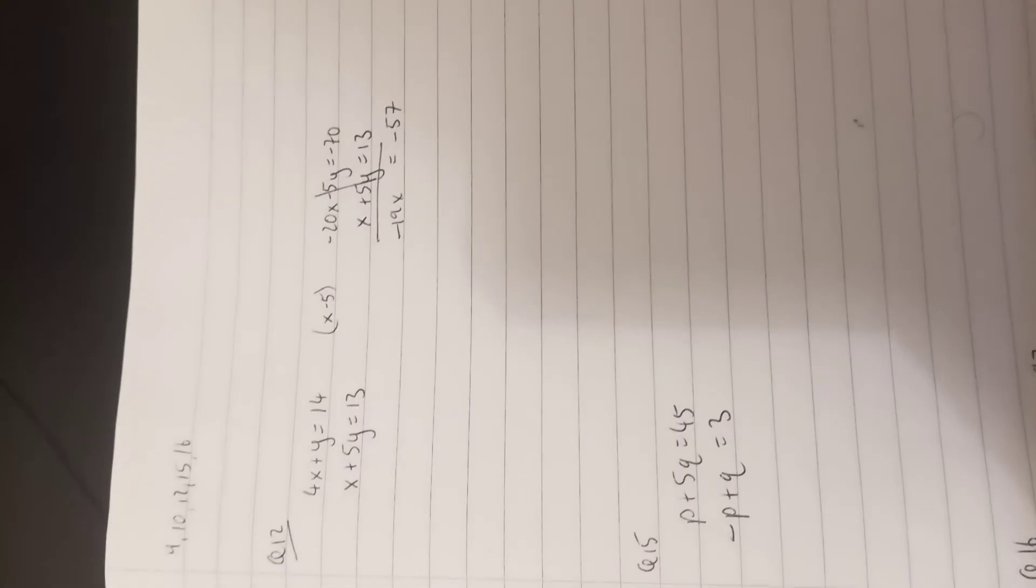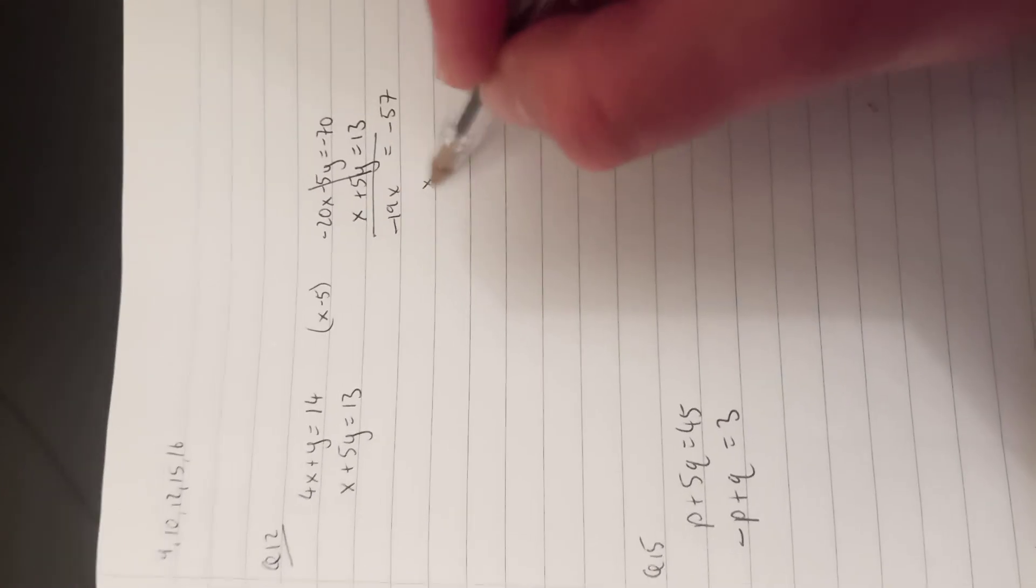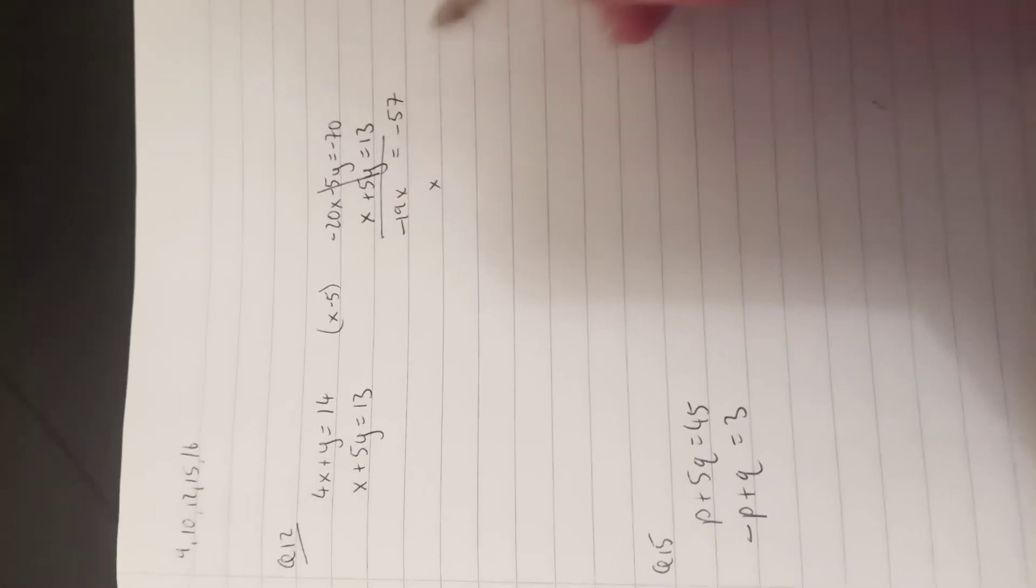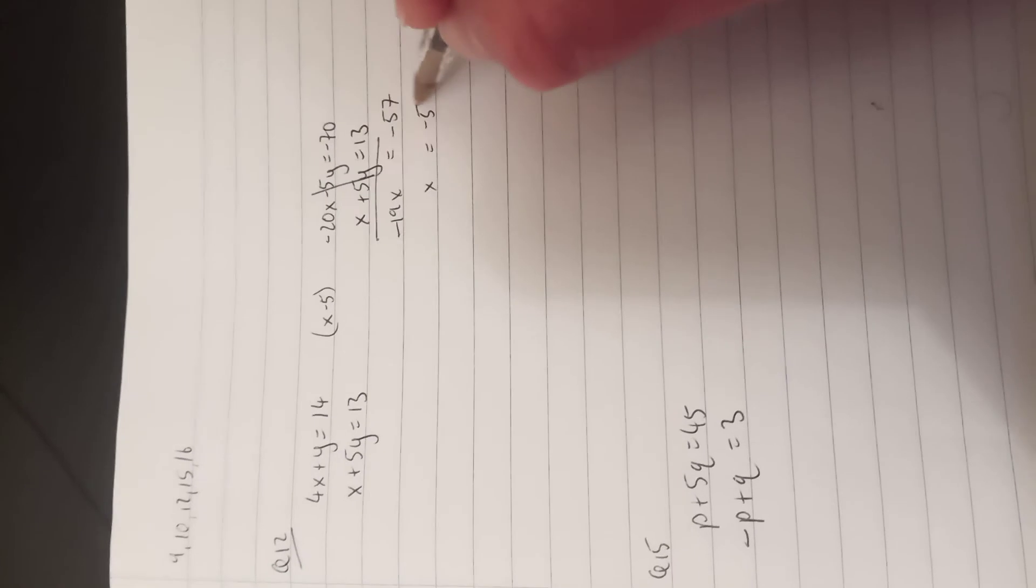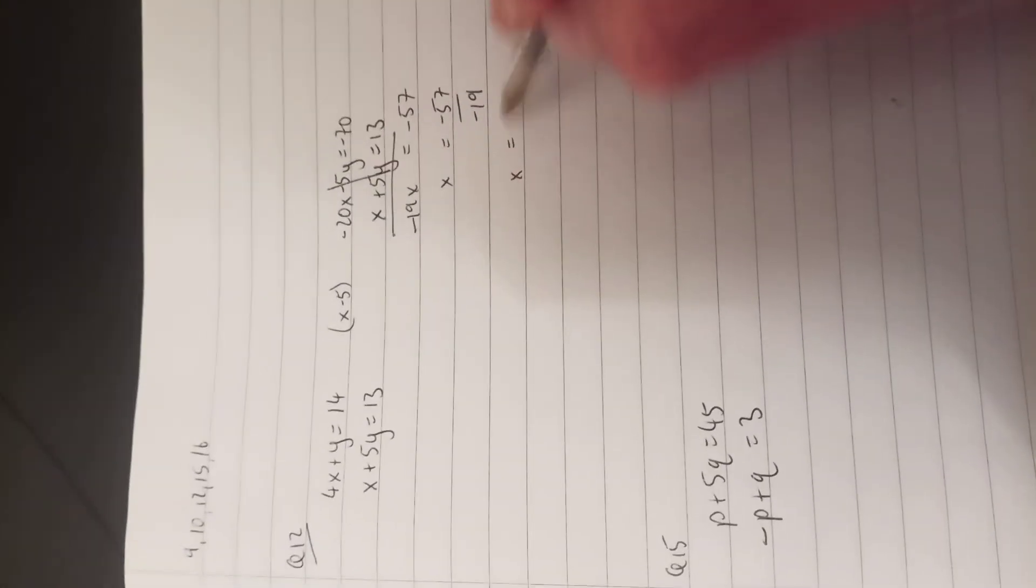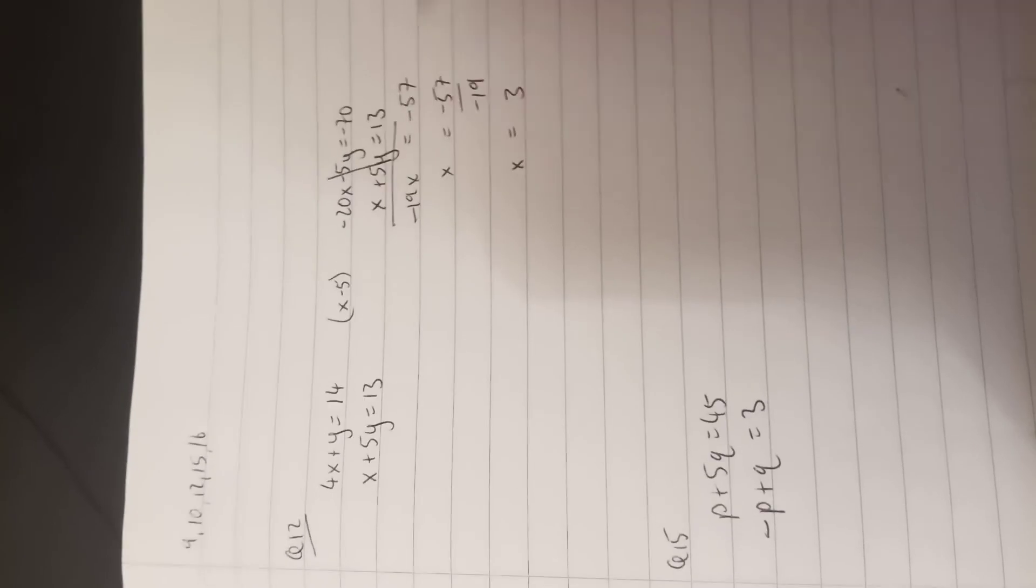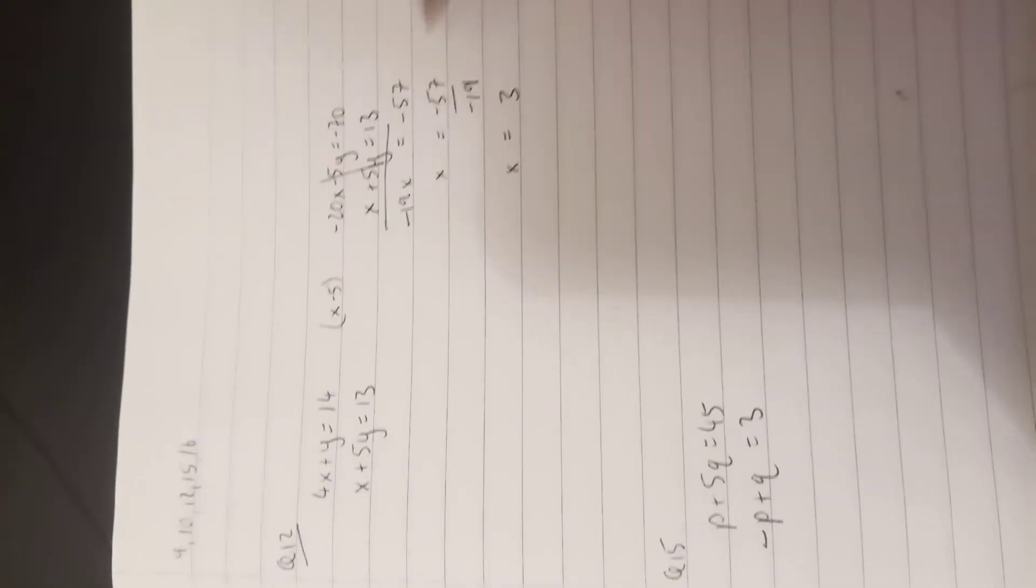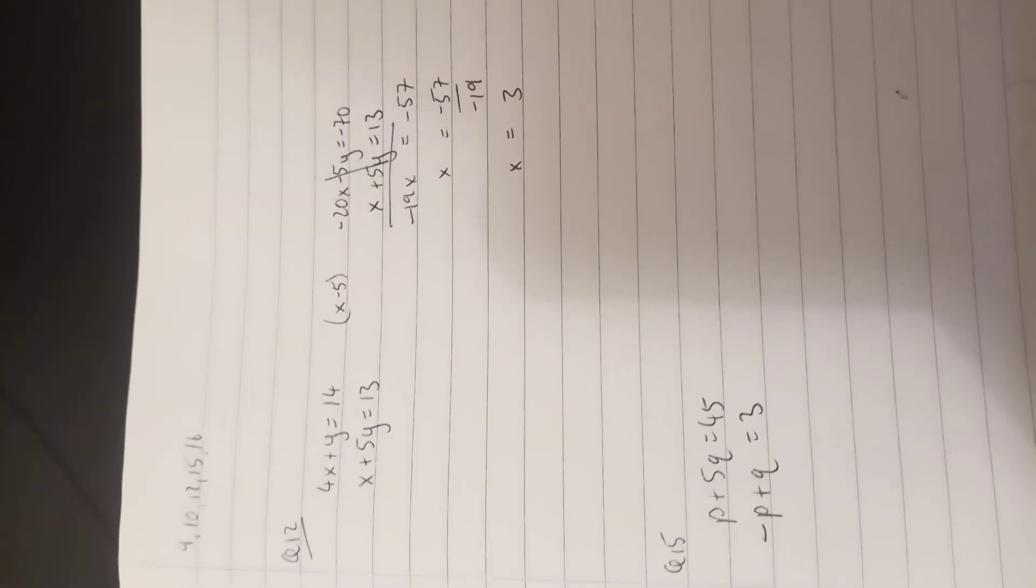So now we need to solve for x. When I bring the minus 19 that's multiplied by the x across, it'll divide under. Minus 57 over minus 19, x works out as plus 3, because minus divided by minus is a plus, and 57 divided by 19 is 3.